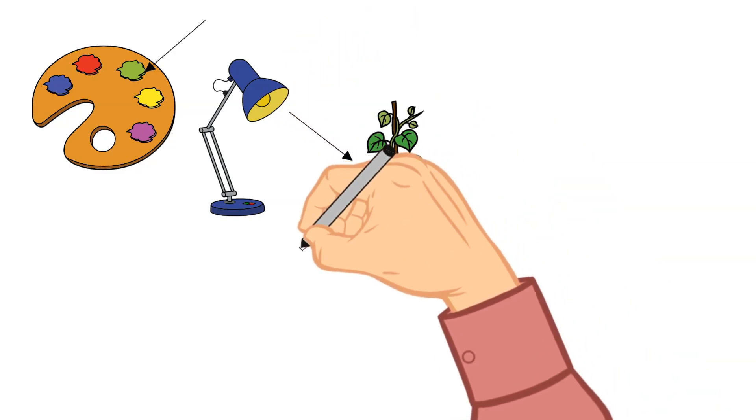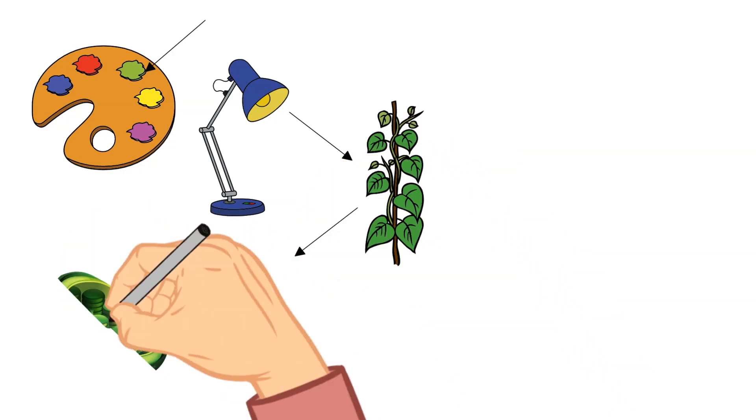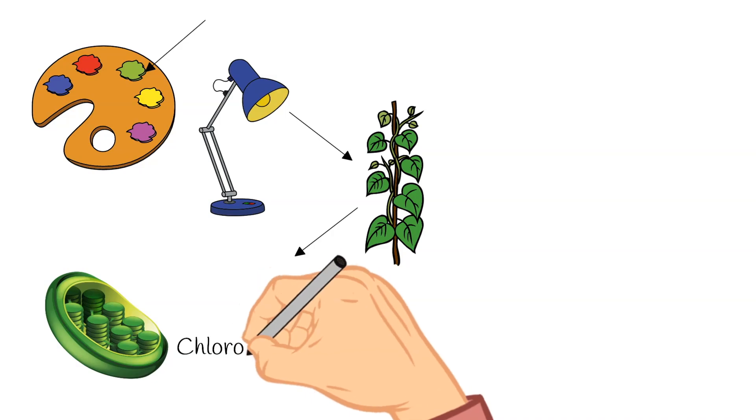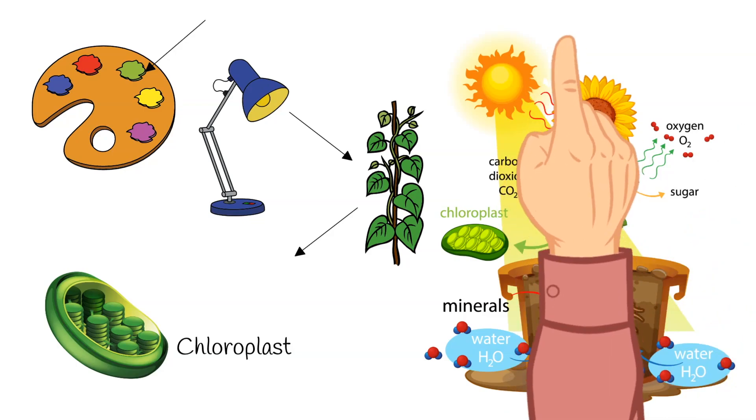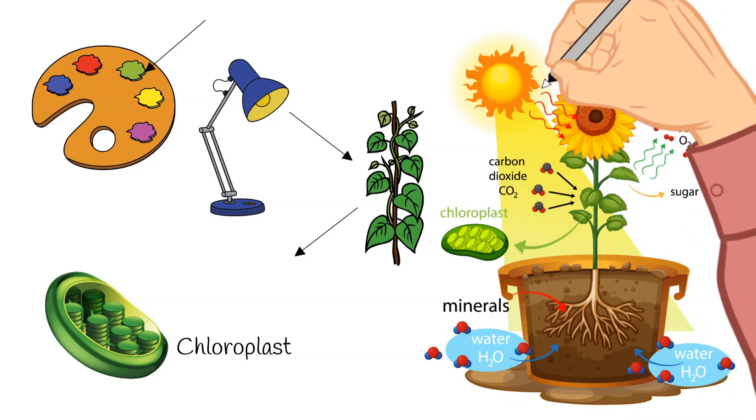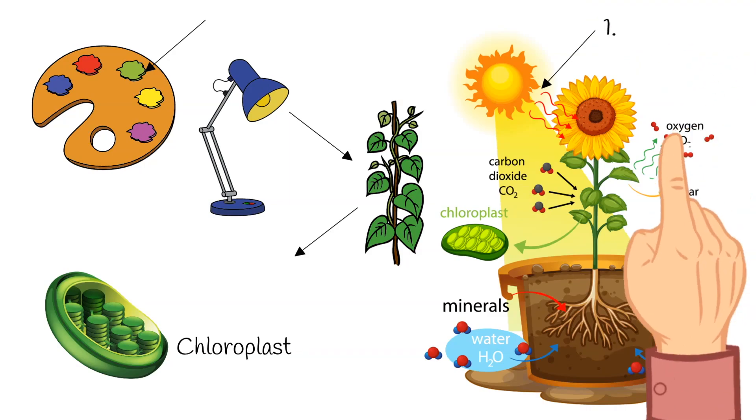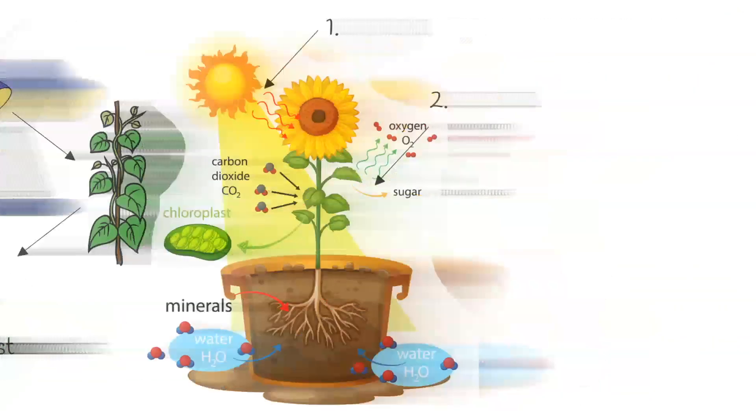So inside a plant's cell are these structures called chloroplasts, and it's these structures that house the chlorophyll. Now, when talking about photosynthesis, there are two main phases to this process. In the first phase, the sunlight is captured by the chloroplasts and then that energy is stored in a chemical called ATP. In the second phase of photosynthesis, ATP is used to create sugar and other organic compounds, and this sugar is what the plant uses to live and to grow.